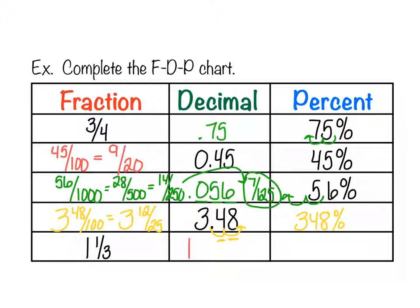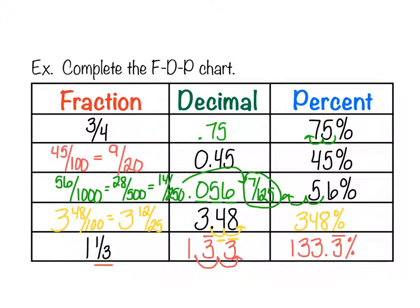For 1 and 1/3, the 1 goes out in front. For the 1/3 part, one-third is 0.3 repeating, so the decimal is 1.3 repeating. Converting to percent gives 133.3 repeating percent — don't put a zero, because the three repeats. Write it as 133 and 1/3 percent if needed as a mixed number.